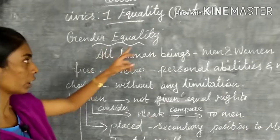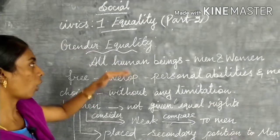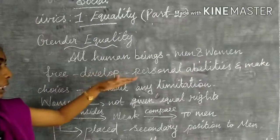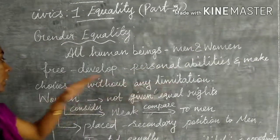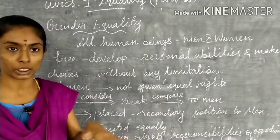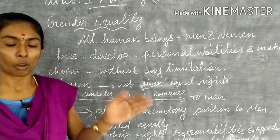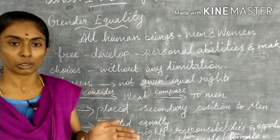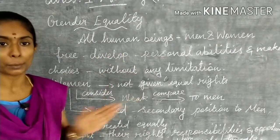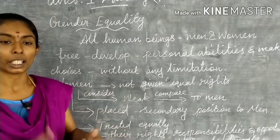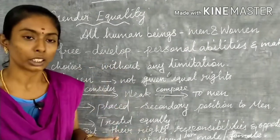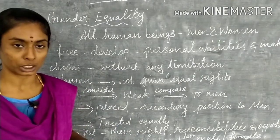Today we are going to see about gender equality. Gender equality means all human beings — both men and women — are free to develop their personal abilities and make choices without any limitation. Gender means female and male, boys and girls. We will not discriminate anyone. Both men and women have the ability to express their own choice without any limitation.